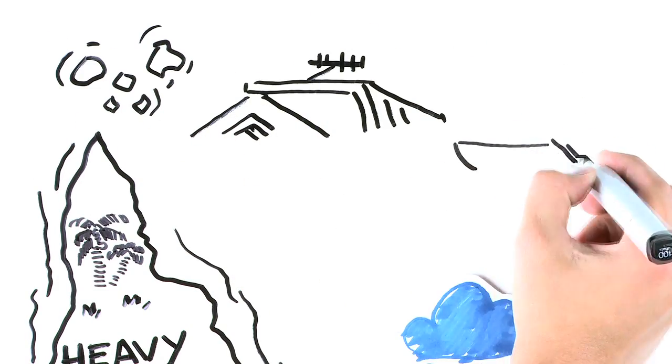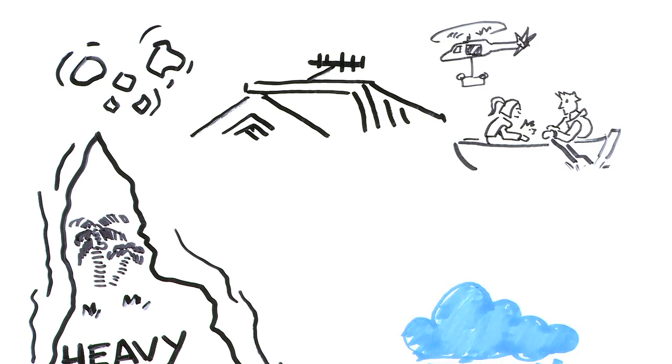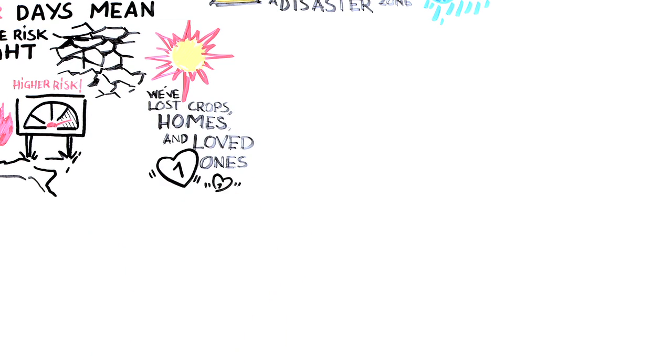The dice are now loaded towards more extreme weather. And do you know what that means for Australians? We've lost homes, ecosystems, livelihoods, and loved ones.